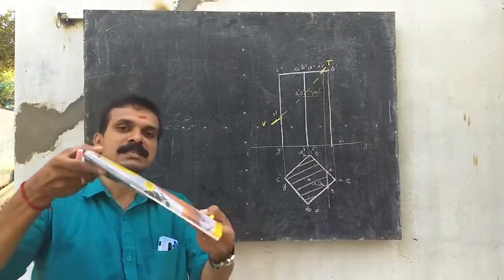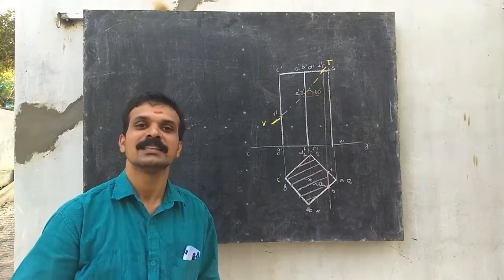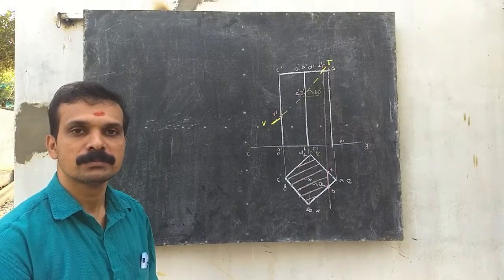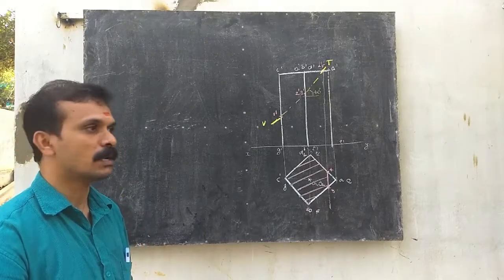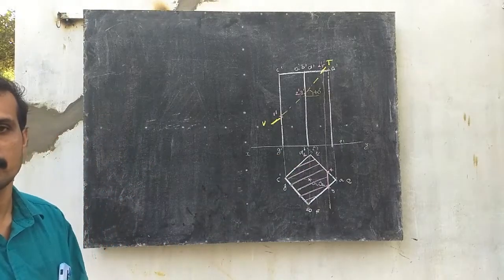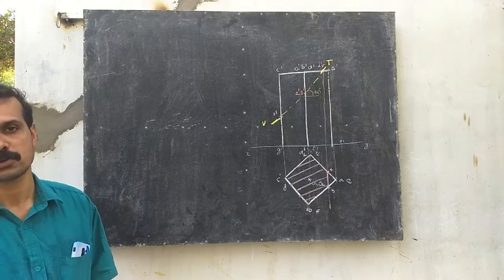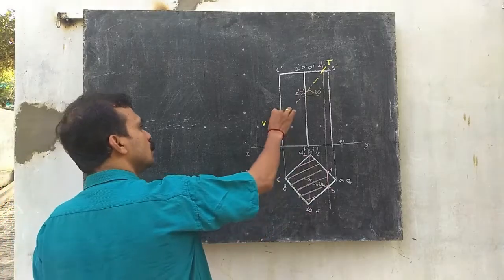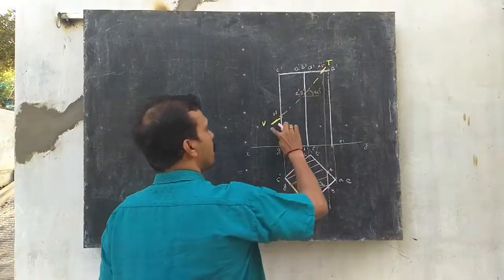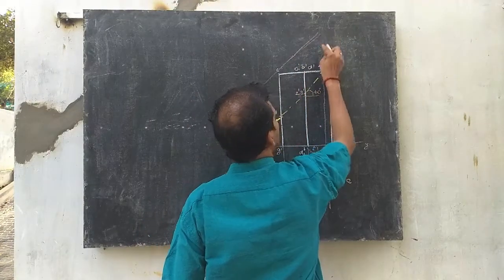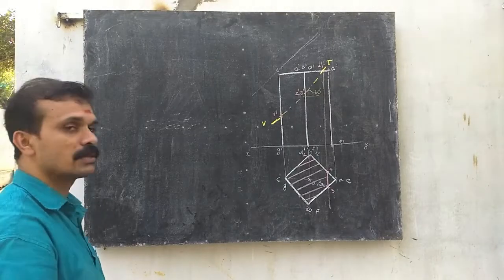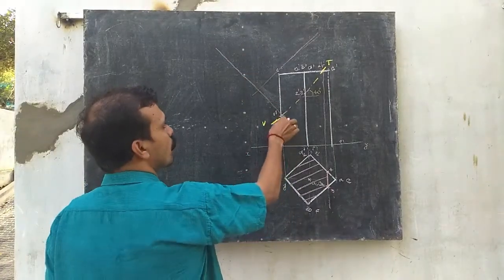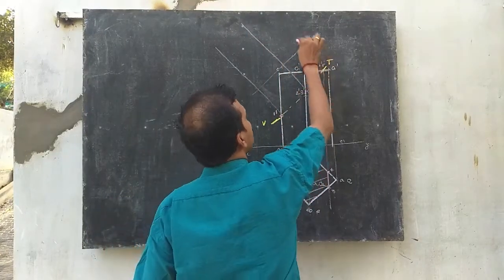Since the plane is inclined, from the top view we only get the top view of the section — not the true shape. Both the front view and the sectional plan are now complete. To obtain the true shape, draw a line parallel to the section's vertical trace — this is called the offset axis — and construct perpendiculars through points 1', 2', 3', 4', and 5'.